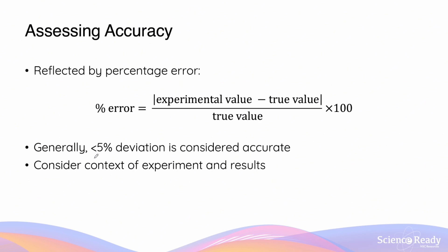Generally speaking, if you arrive at a percentage error of less than five percent, the result is considered accurate. However, this is a general rule — you should always consider the context of the experiment. In some circumstances, five percent may be very good, while in others, where equipment is very sensitive and errors have been minimized, five percent may be substantial and indicate inaccurate results. If unsure, use the general rule but always consider context.